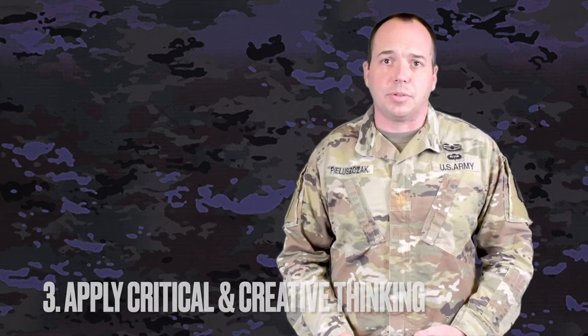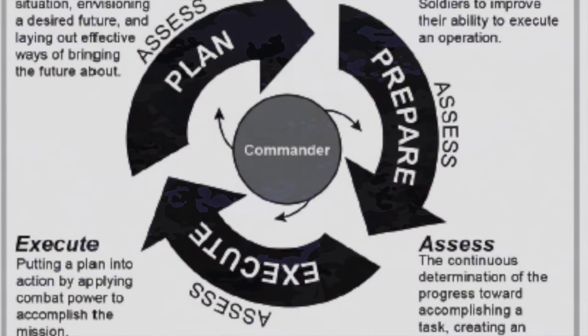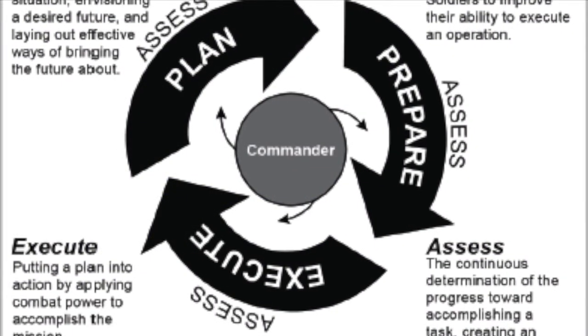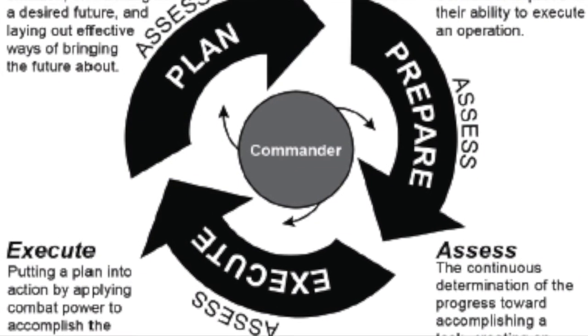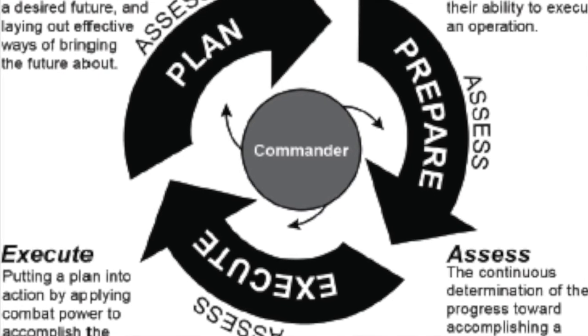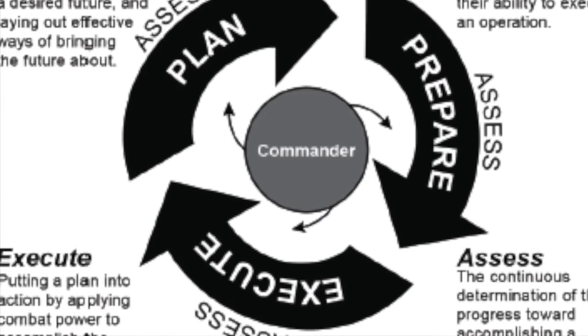Applying critical and creative thinking means questioning information and challenging biases and emotional responses for a logical end state. The major activities conducted in the Operations Process are planning, preparing, executing, and continuously assessing the operation. It should be noted that they are not discrete; rather they overlap and recur throughout an operation. Commanders and their staff do not stop planning once an order publishes; rather they continue to refine and adjust based on changes to the operational environment.